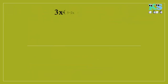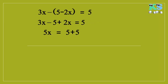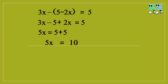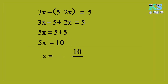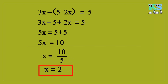Y کی قیمت رکھنے پر: 3X minus (5 minus 2X) equal to 5۔ minus 5 equal کے ادھر جا کر plus میں تبدیل ہوگا، 5X equal to 5 plus 5، 5X equal to 10۔ 5 equal کے ادھر جا کر تقسیم میں تبدیل ہوگا، X equal to 10 divided by 5، X equal to 2۔